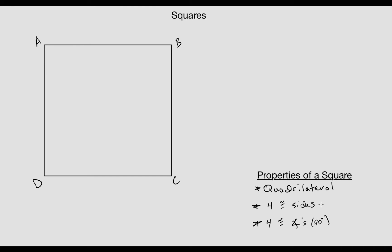You might notice that the four congruent sides is the definition of a rhombus, and the four congruent angles of 90 degrees is a rectangle. So a square is both a rhombus and a rectangle, which means it has the properties of both.